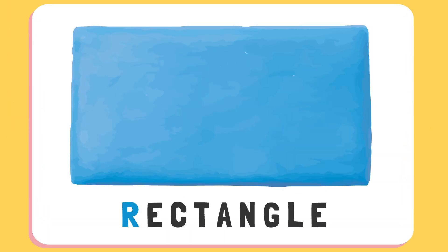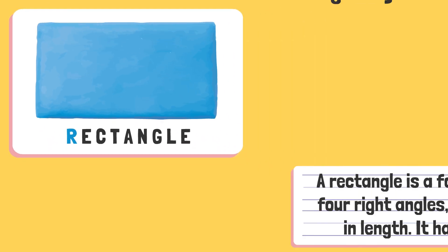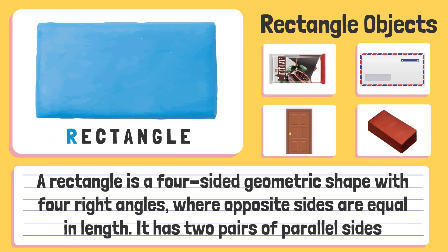Rectangle. A rectangle is a four-sided geometric shape with four right angles, where opposite sides are equal in length. It has two pairs of parallel sides.